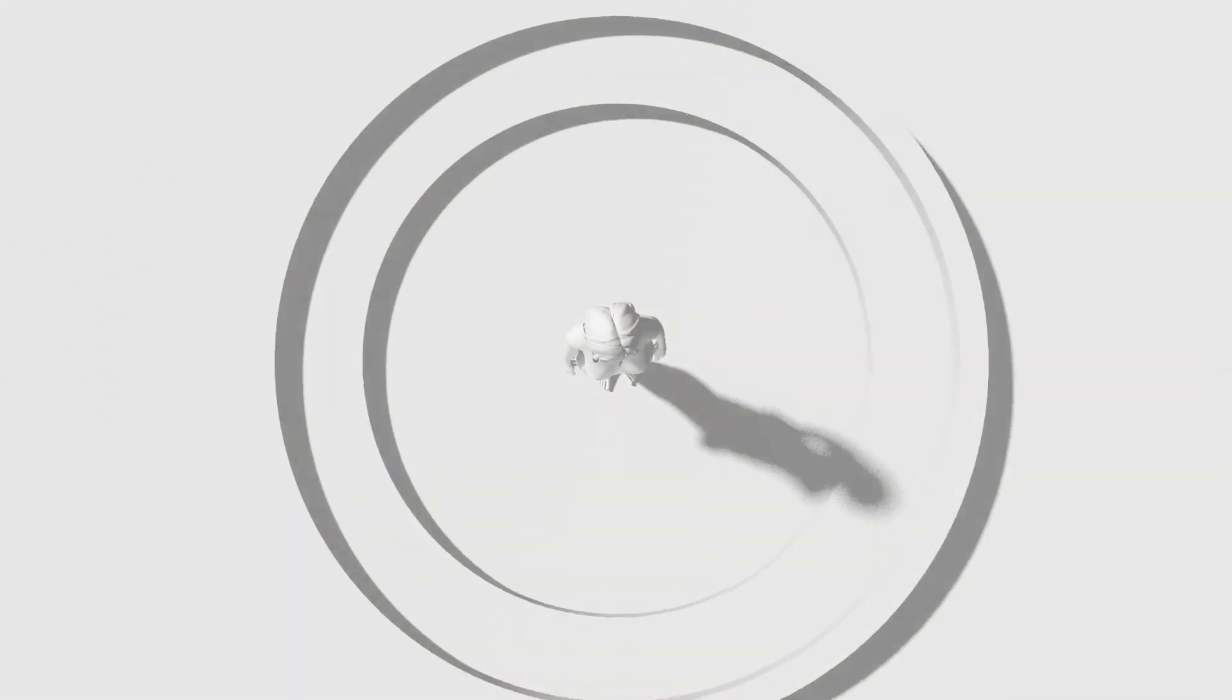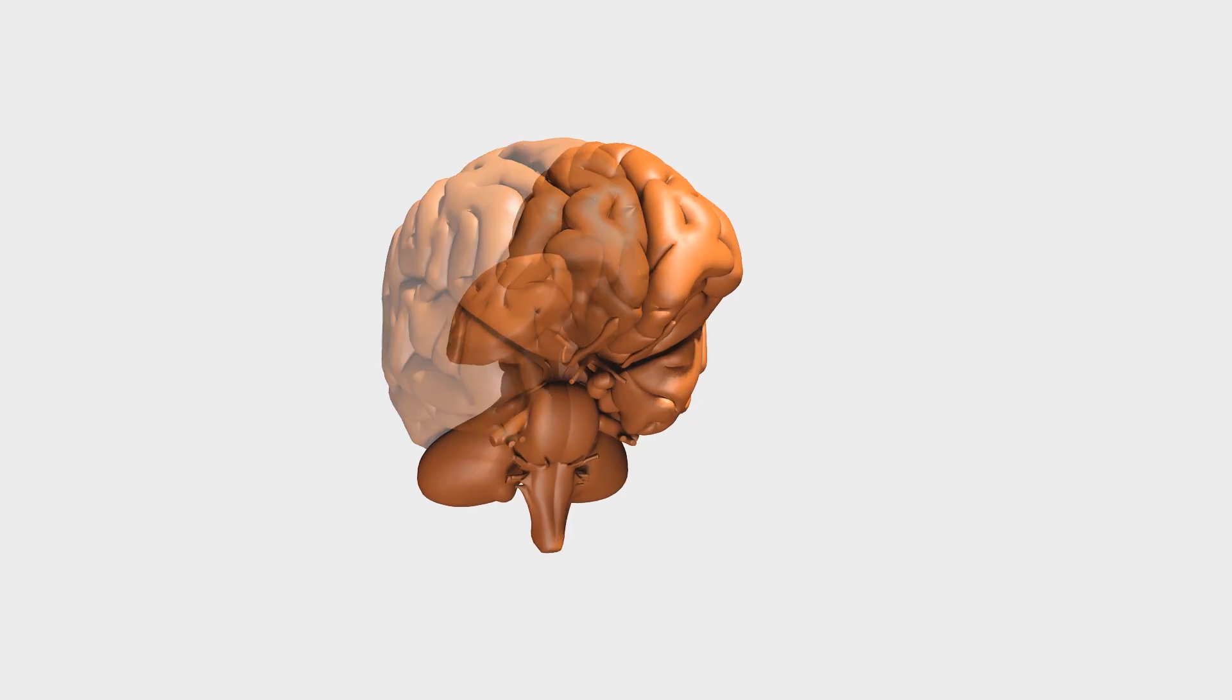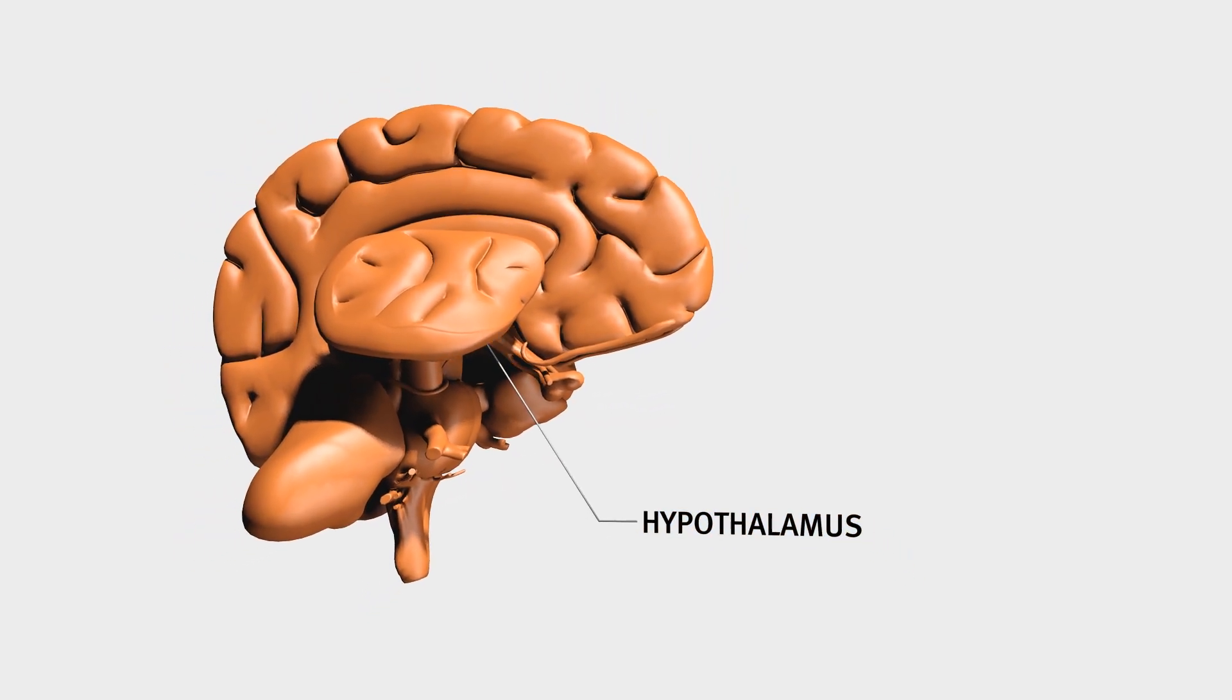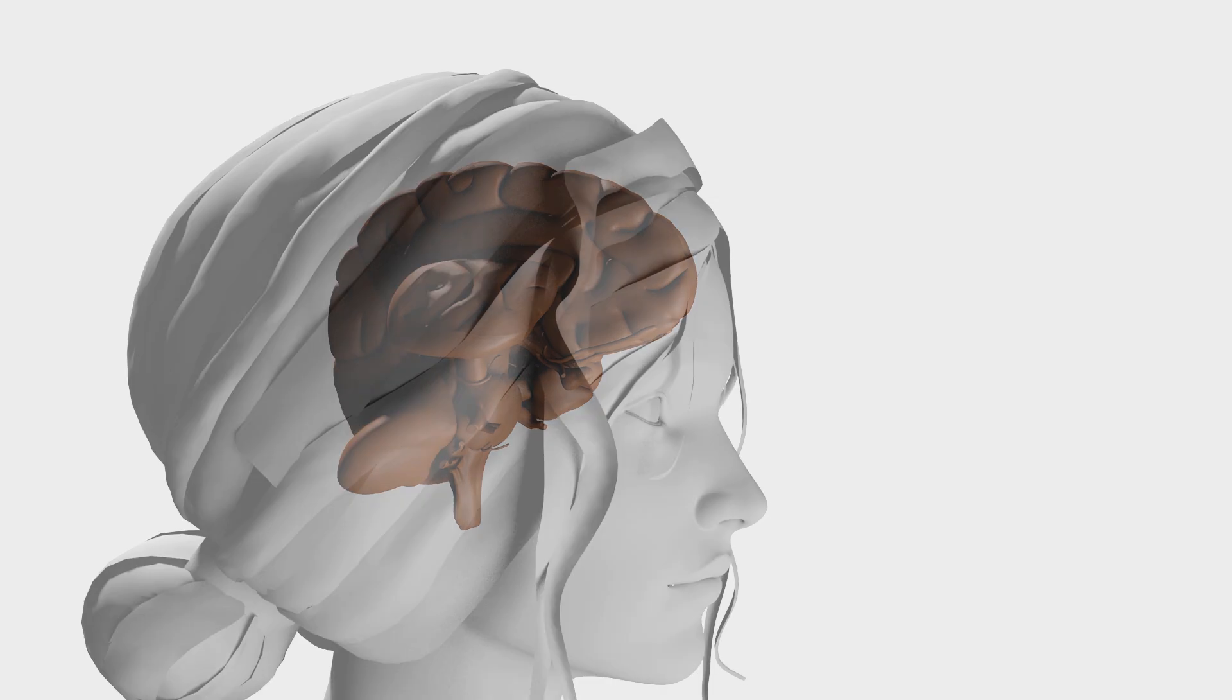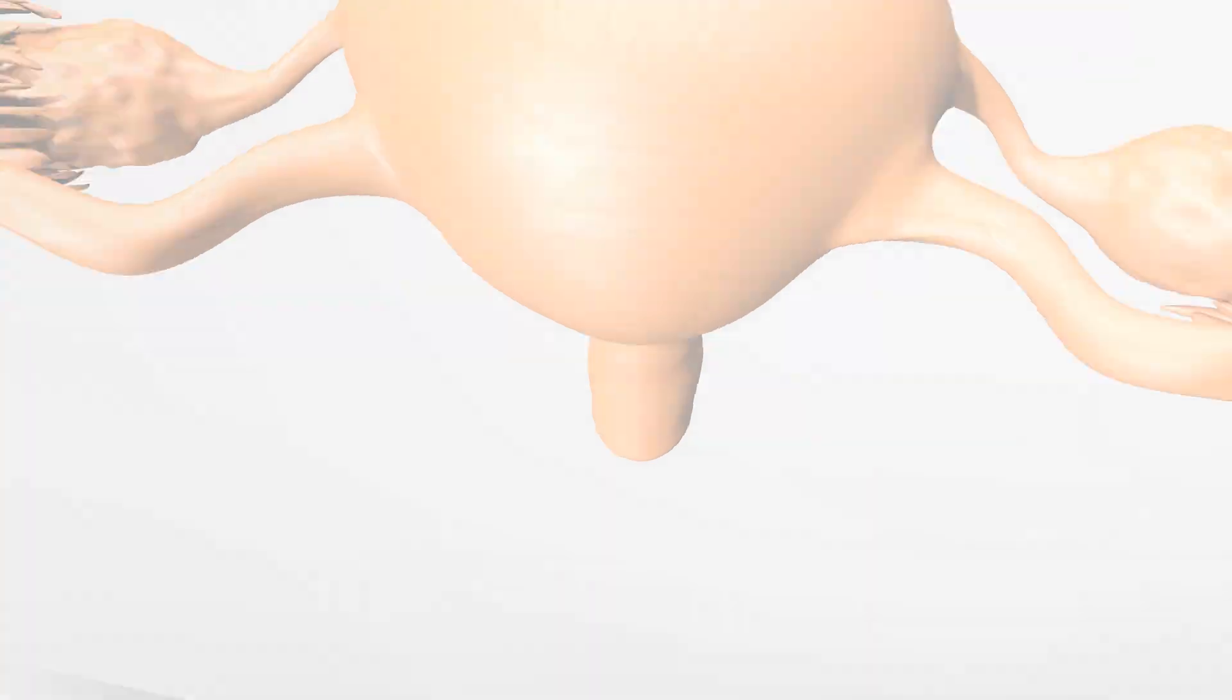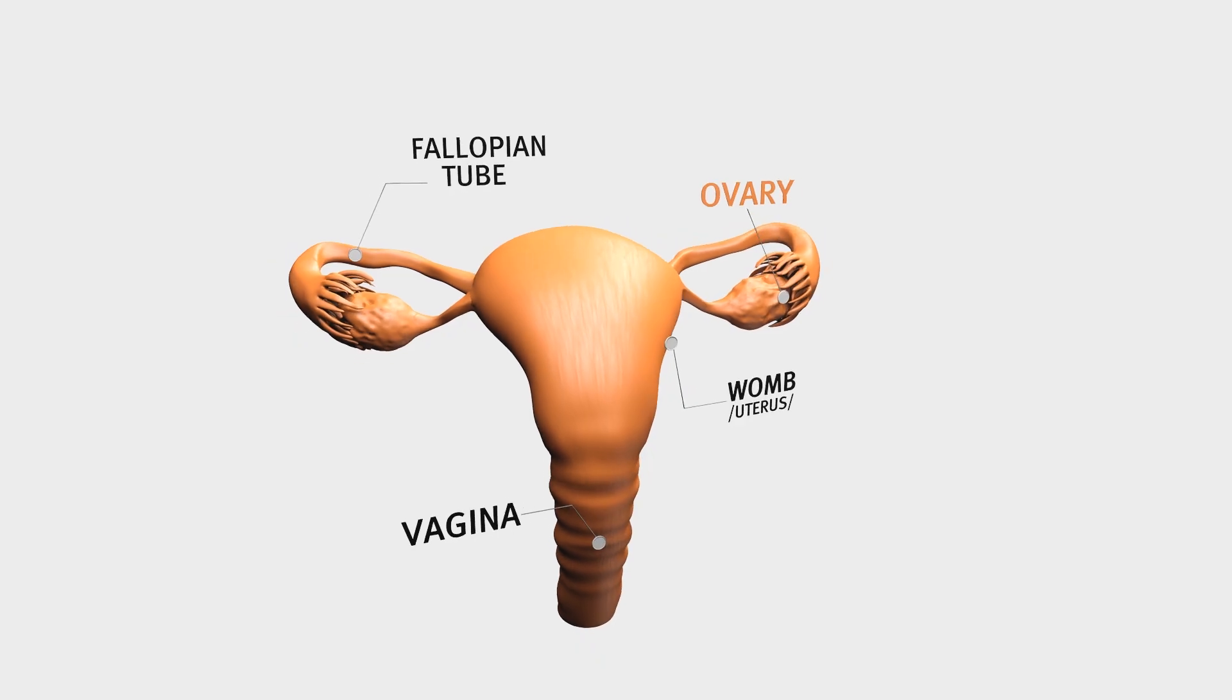The natural processes in the ovaries and the womb are controlled by hormones. Gonadotropin-releasing hormone is secreted from the hypothalamus in the brain and stimulates the production of luteinizing hormone and follicle-stimulating hormone by the pituitary gland in the brain. They control estrogen and progesterone production in the ovaries.